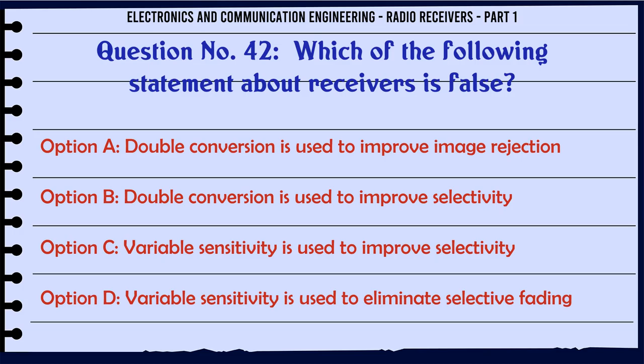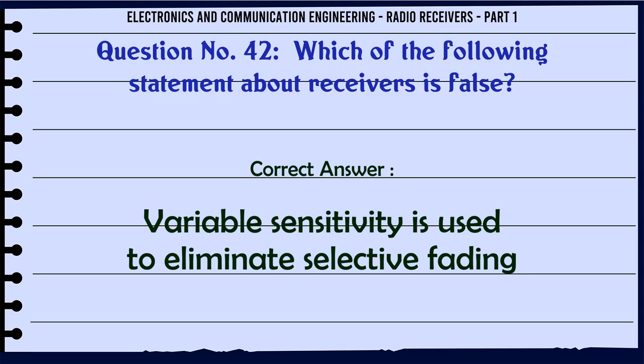Which of the following statements about receivers is false? A. Double conversion is used to improve image rejection. B. Double conversion is used to improve selectivity. C. Variable sensitivity is used to improve selectivity. D. Variable sensitivity is used to eliminate selective fading. The correct answer is variable sensitivity is used to eliminate selective fading.